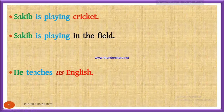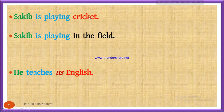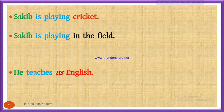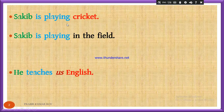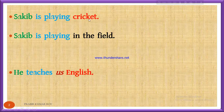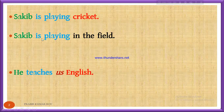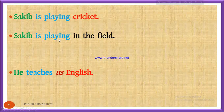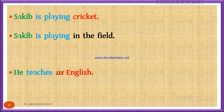We can come to the conclusion that the verb that has a direct object to receive the action is called a transitive verb. So 'playing' is transitive in 'Saqib is playing cricket'. But in 'Saqib is playing in the field', the verb 'playing' has no object, so here 'playing' is intransitive.